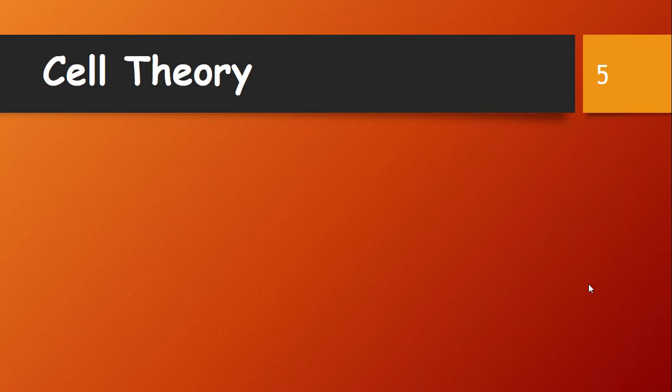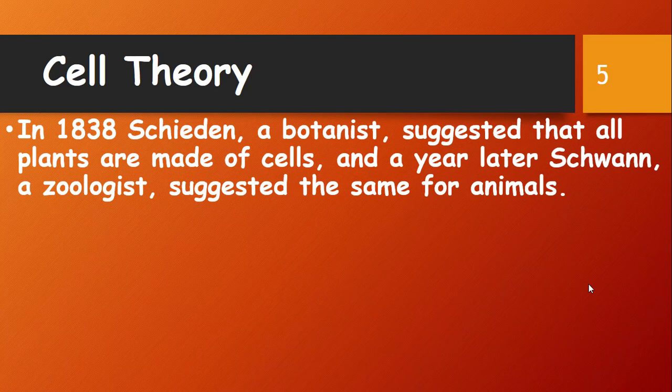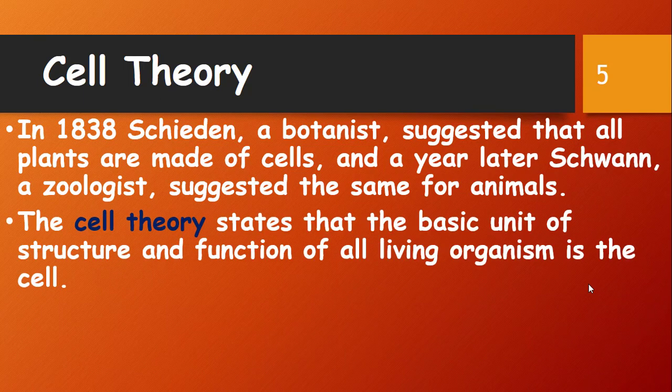Cell theory: let me introduce two scientists — Schleiden and Schwann. Schleiden was a botanist who found the same things Robert Hooke had seen in the cells of cork, and stated that the cell is the basic structural and functional unit of all plants. A year later, Schwann, a zoologist, suggested the same for animals: that the cell is the basic structural and functional unit of all animals. Combining these two theories gives us cell theory, which states that the cell is the basic unit of structure and function of all living organisms.